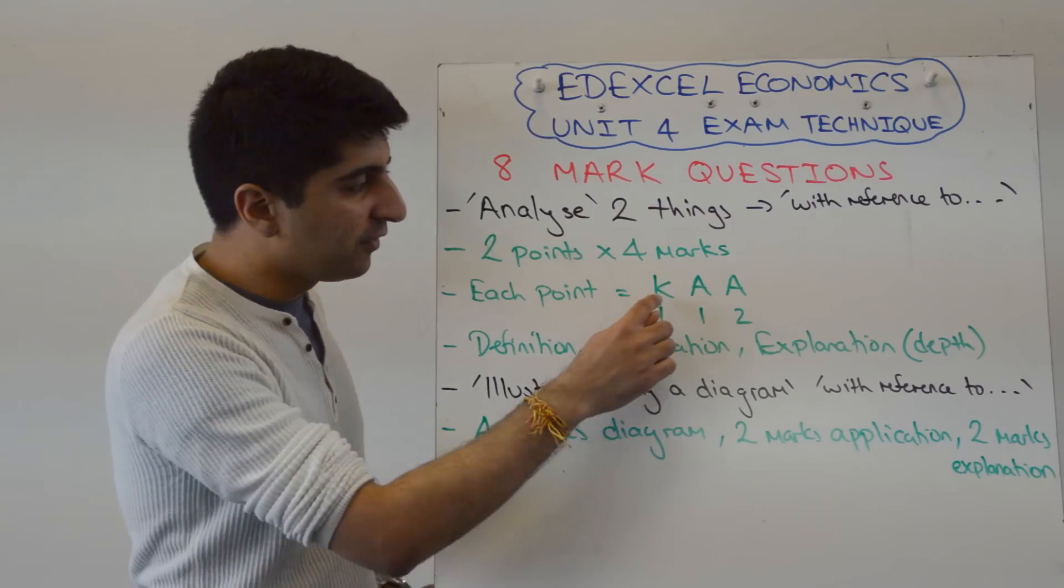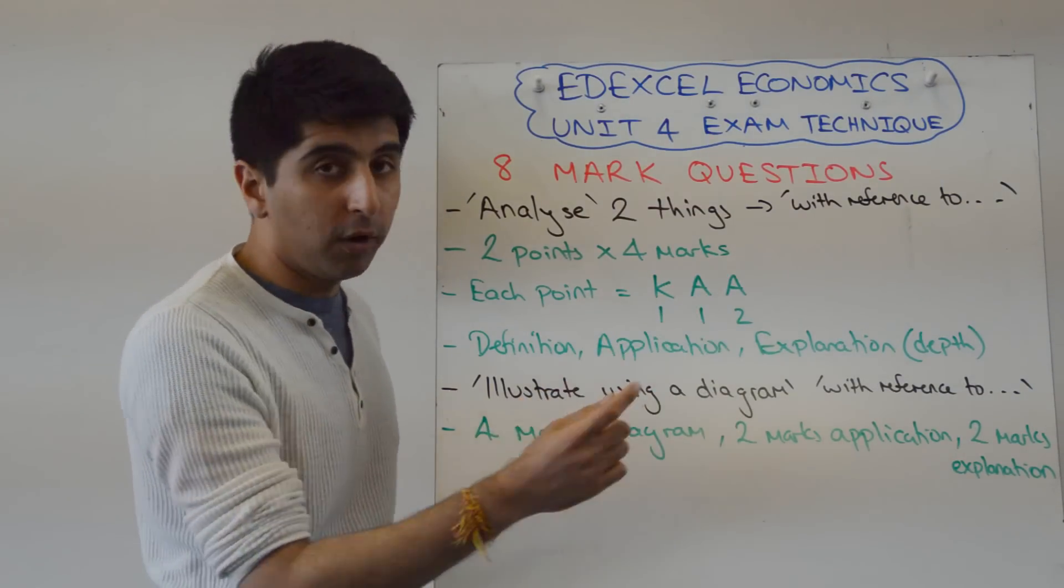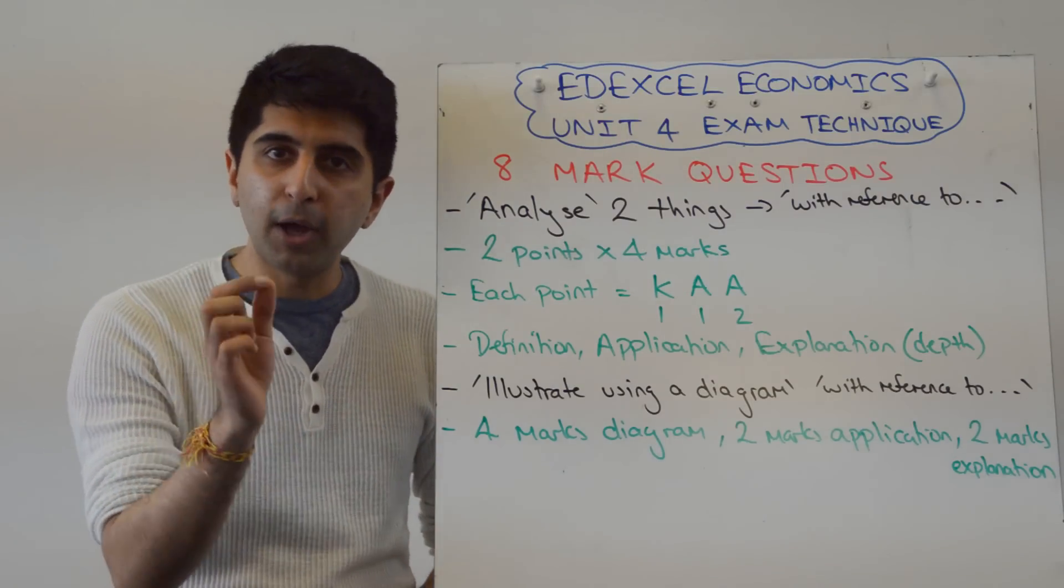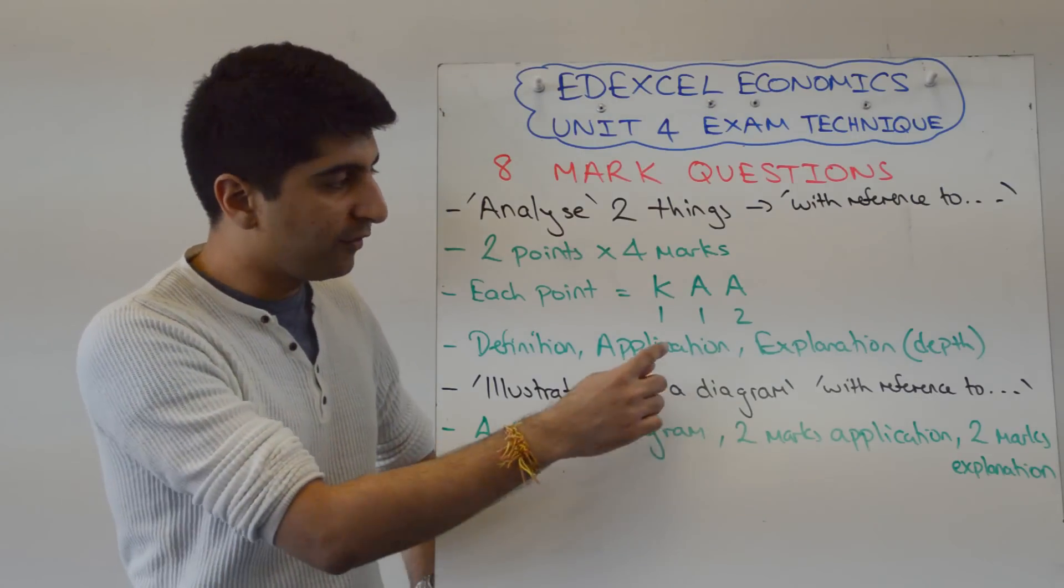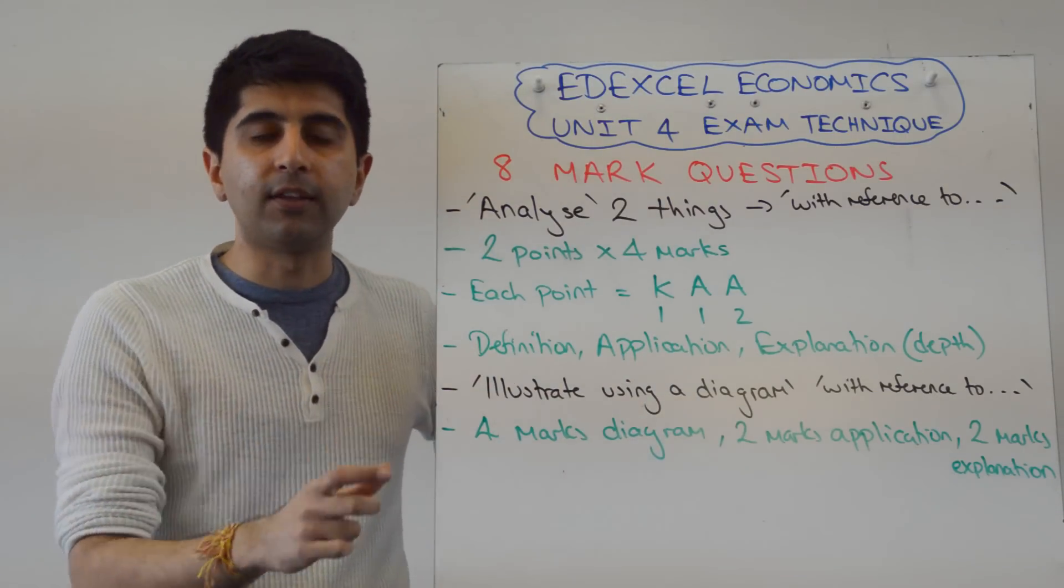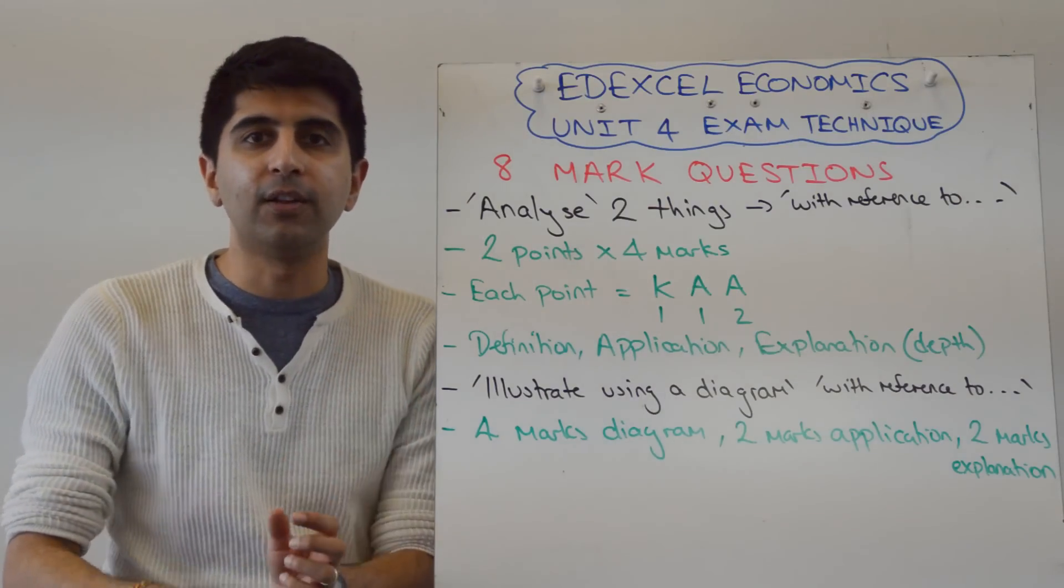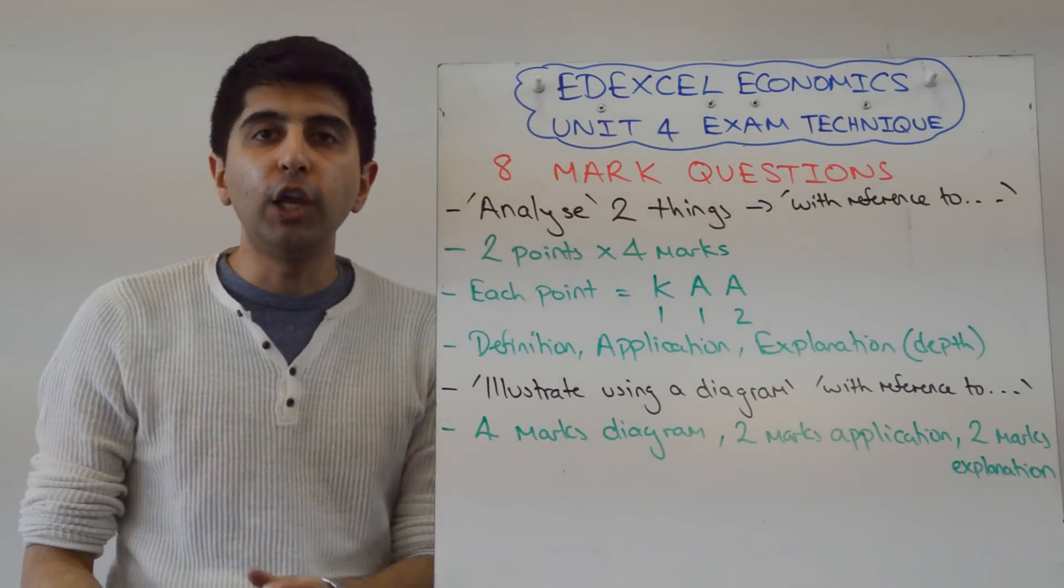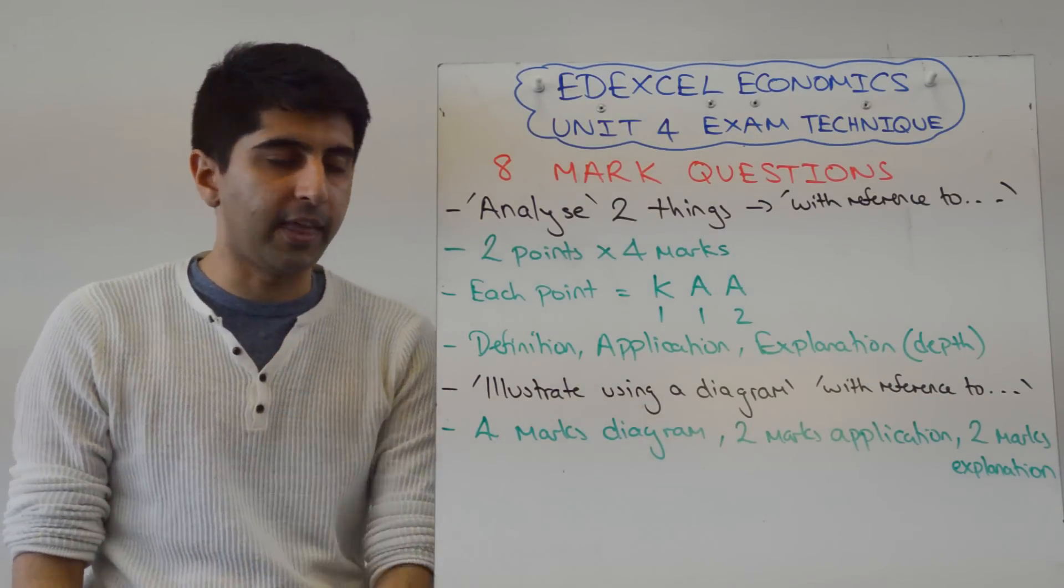Each point you're looking for knowledge, application and analysis. One mark for knowledge, one mark for application and two marks for your explanation per point that you make. So you're looking for definitions, of course. You're looking for one application mark per point that you're making. So one reference to the data, one reference to the case study material per point that you're making. And two marks for explanation. So you need to make sure your explanation is in relative depth for you to get two marks there.